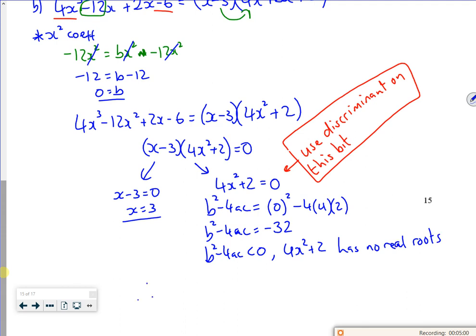So because b squared minus 4ac is less than 0, the 4x squared plus 2 has no real roots. So therefore, the only real roots is x equals 3. That's what we wanted to show, wasn't it? So that's quite nice.